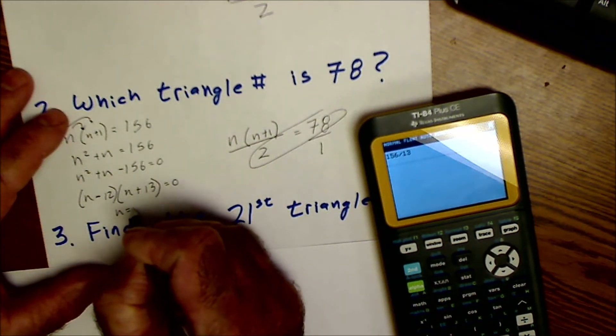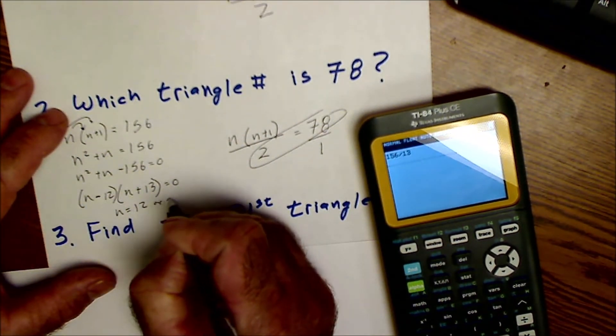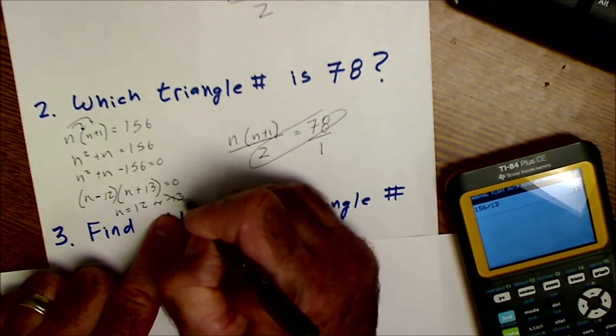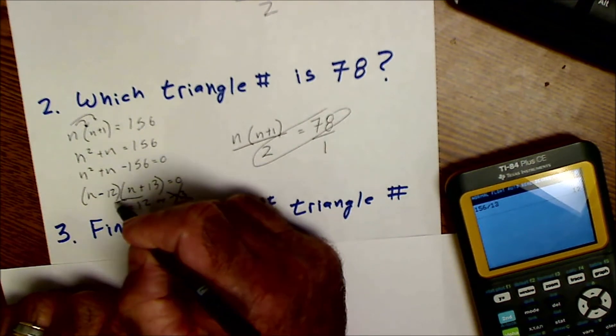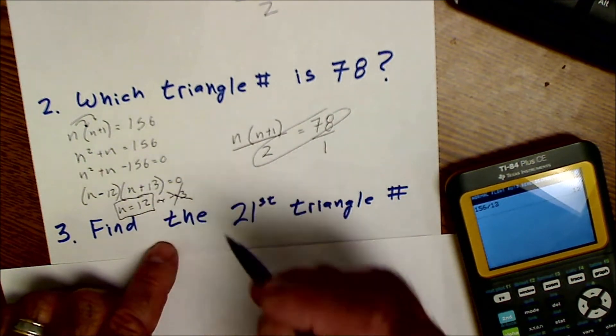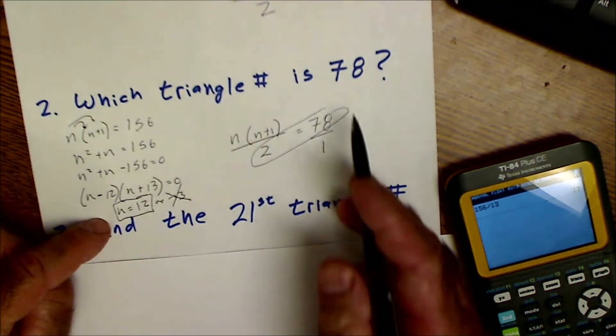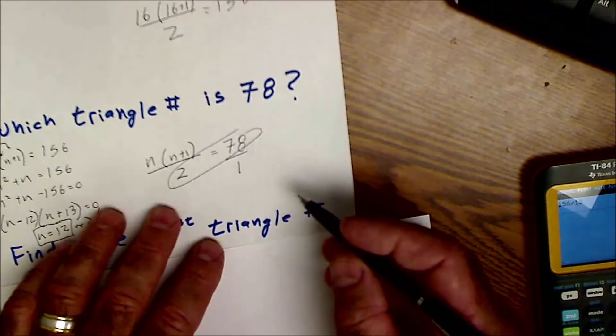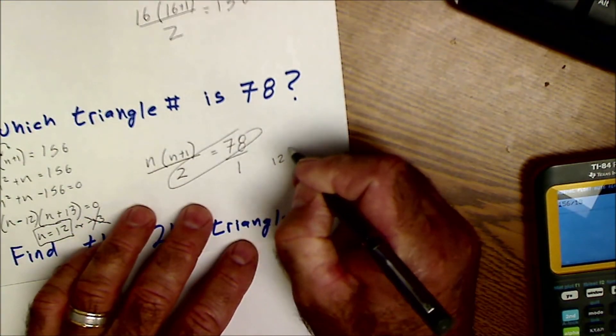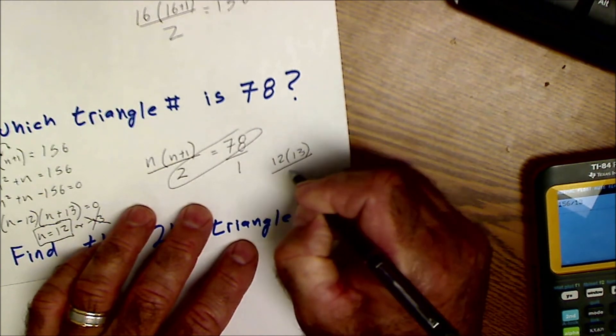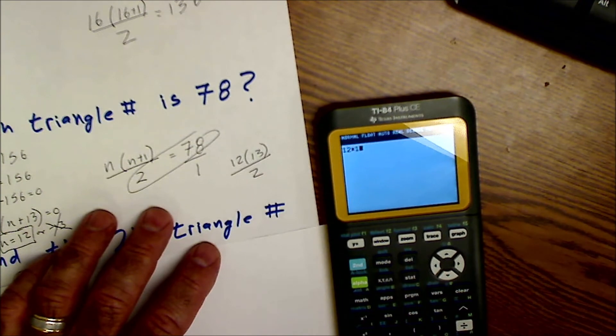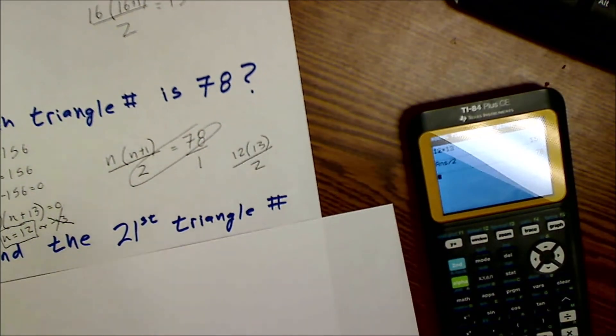So what that means is n could either equal 12 or negative 13. Negative answer doesn't make sense. So the answer is 12. So the 12th term in the series will equal 78. And we can double check that by plugging it into this equation. 12 times 13 divided by 2 should be equal to 78. And it is.